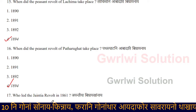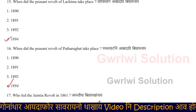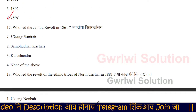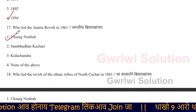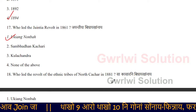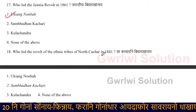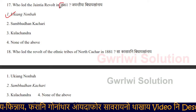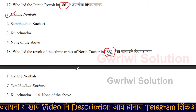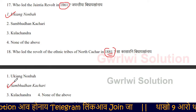Who led the joint-tea revolt in 1861? Next: who led the revolt of the ethnic tribes of North Caesars in 1881? It was around 1897. The revolt of the ethnic tribes of North Caesars in 1881 — often noted in 1881 — and you make your lead.